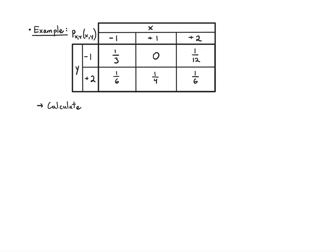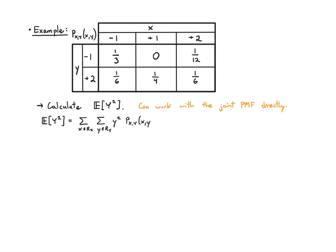Let's work through an example. In this table I've listed a joint PMF, and I'm going to try to work out the expected value of Y squared. One thing I can do is work with this joint PMF directly. So I can write E of Y squared as the sum over x and the sum over y of Y squared — that's my function — times P of x, y, the joint PMF. So now I just have to go table entry by table entry.